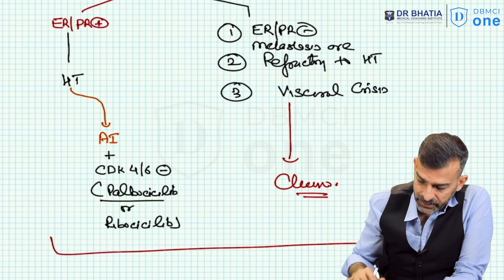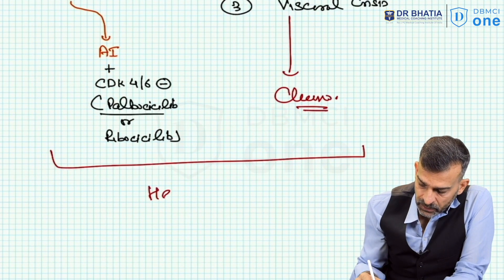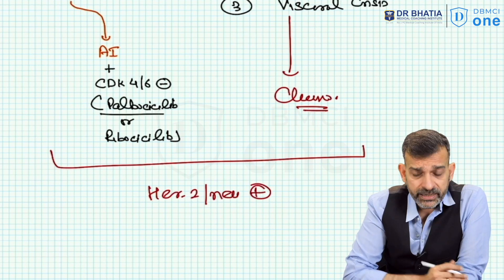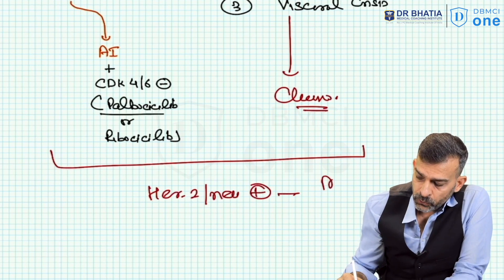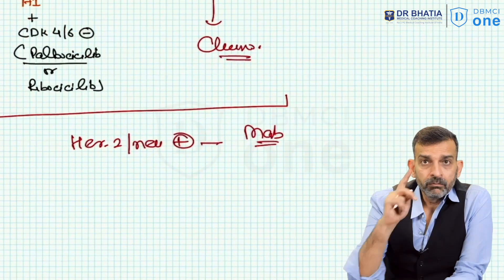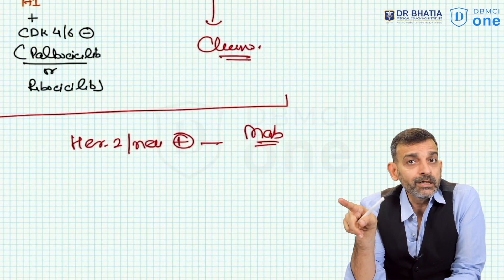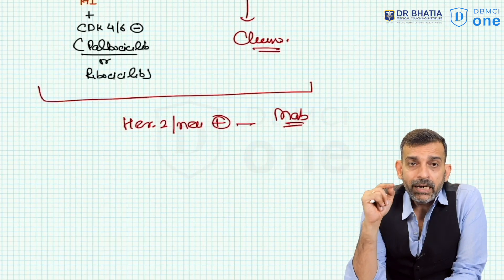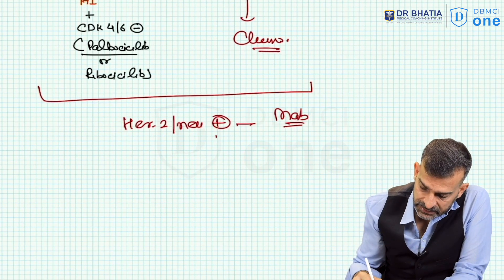In both these situations, along with these drugs depending on ER/PR status and these indications, if patient is HER2 neu positive, if the patient is HER2 overexpressed, we may need to add monoclonal antibody pertuzumab and trastuzumab along with emtansine.